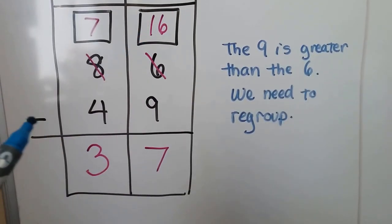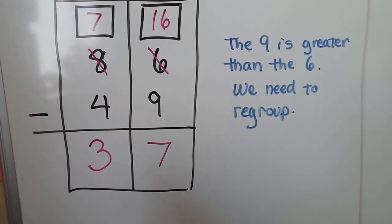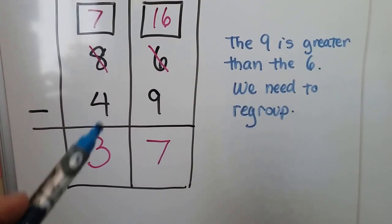Now we have 16 minus 9. That's a 7. We have 7 minus 4. That's a 3.